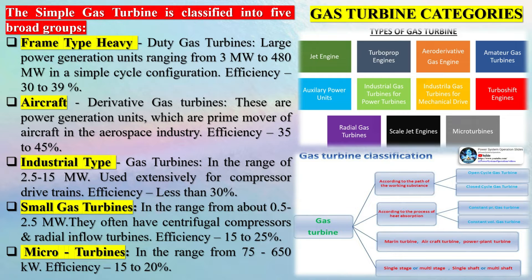The combustion system, typically made up of a ring of fuel injectors, injects a steady stream of fuel into combustion chambers where it mixes with the air. The mixture is burned at temperatures of more than 2000 degrees Fahrenheit.